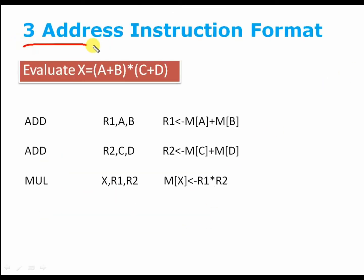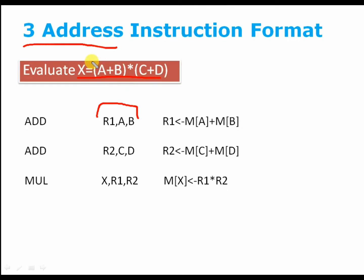Three address instruction — the name itself suggests that it will use three operands. Let's take an example. Evaluate this expression: x equals a plus b, multiplied by c plus d. So here we have to add the first part, then add the second part, and then multiply both of them.